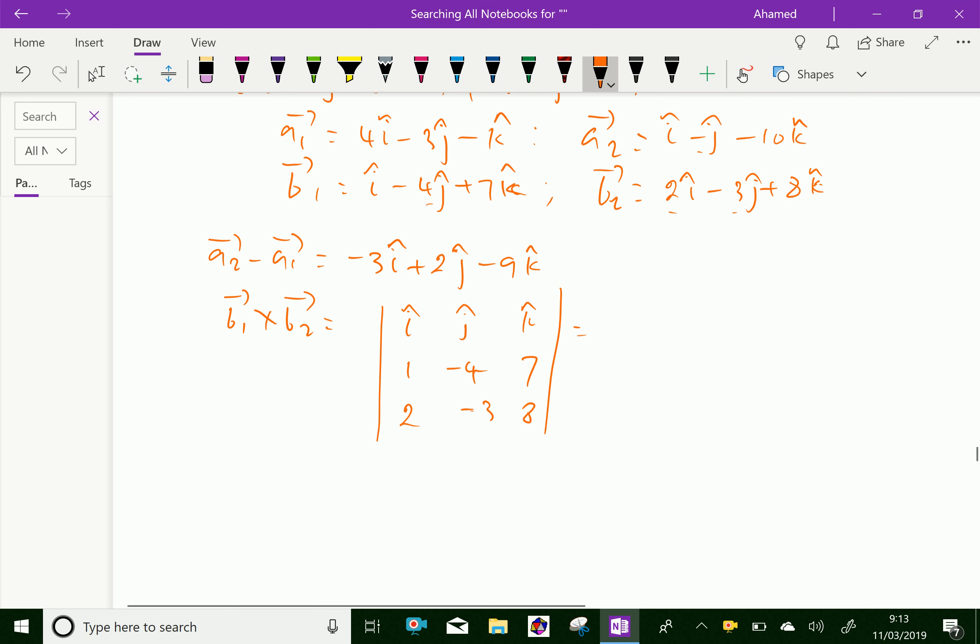Let us calculate the value. Here i into minus 32 plus 21, minus j into 8 minus 14.